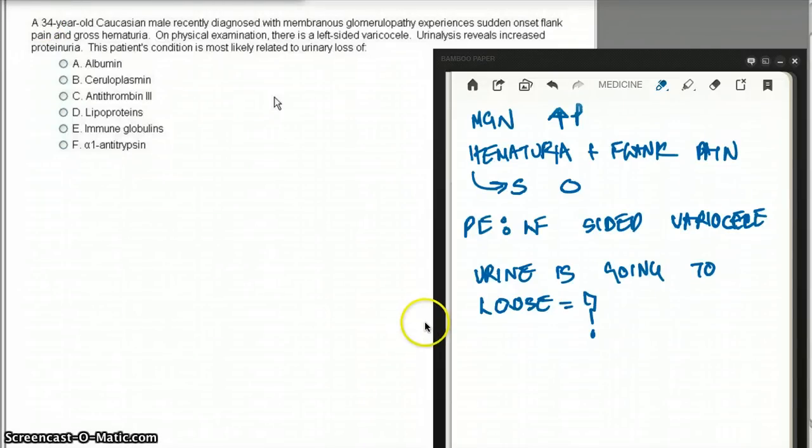This question deals with a 34-year-old Caucasian male recently diagnosed with membranous glomerulopathy, experiencing sudden onset flank pain and gross hematuria. So we have MGN here, hematuria and flank pain, which is sudden onset.